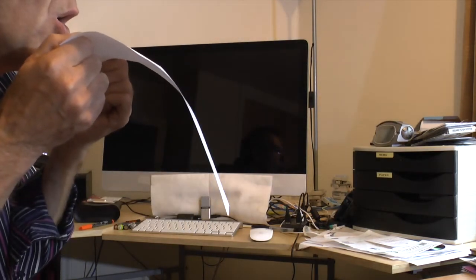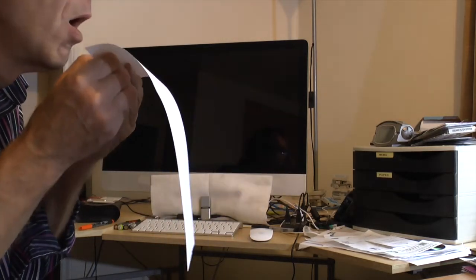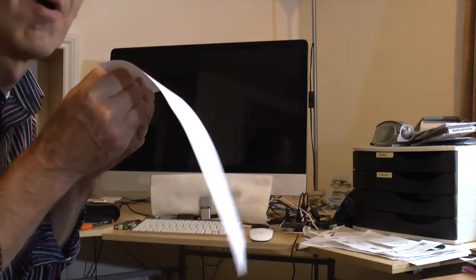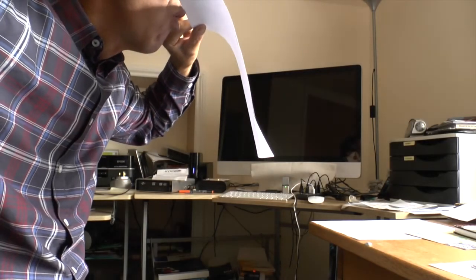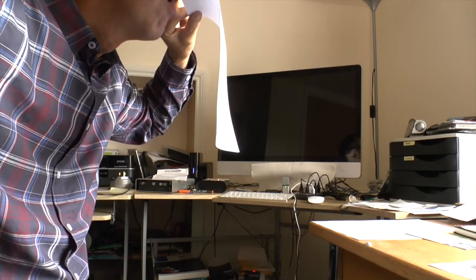So why does this paper rise as we blow over the top? It looks convincing that it might be the Bernoulli effect. But if it is, and then we blow across the bottom of the paper, the paper should go down. But, as you can try for yourself, it doesn't.